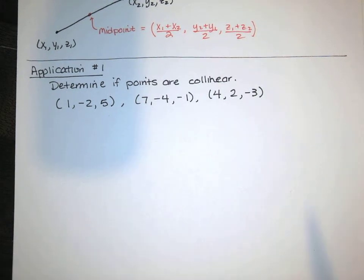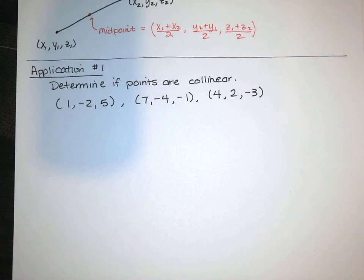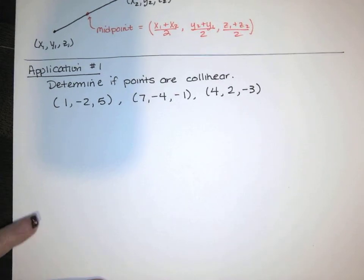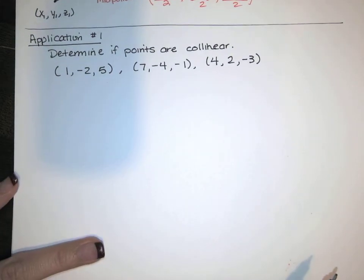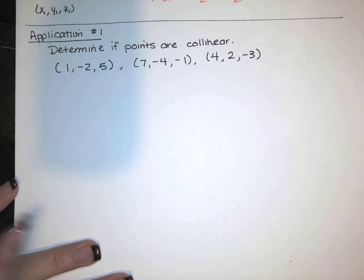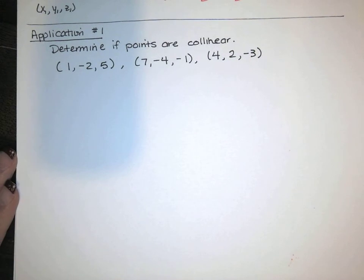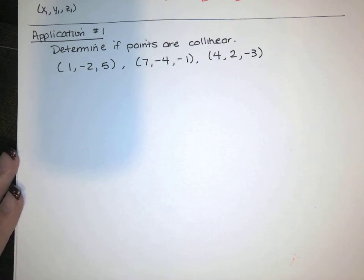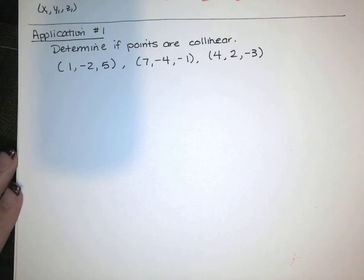So they're just asking us if these points are collinear. I could get out my three-dimensional coordinate system and start graphing, but you know how hard it is to graph in 3D. And sometimes because we're graphing in 3D on a 2D piece of paper, those graphs aren't very insightful. Since they're not very insightful, it's helpful to just draw a cartoon of this.